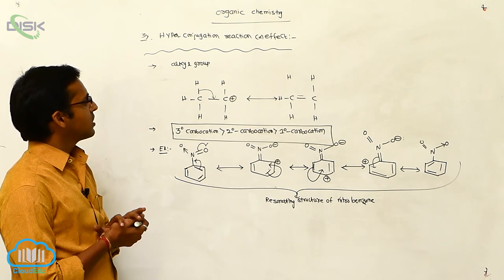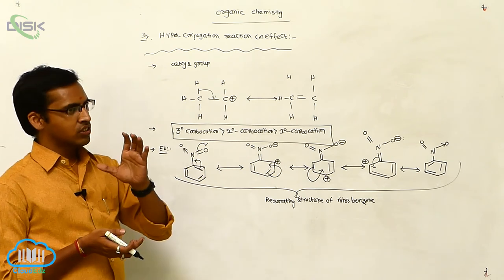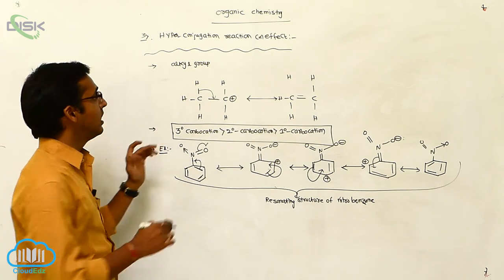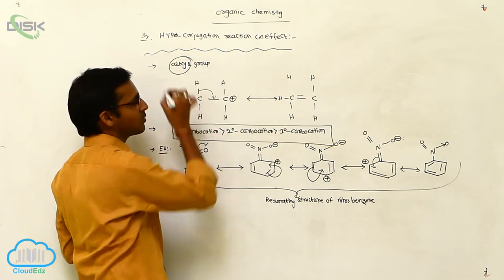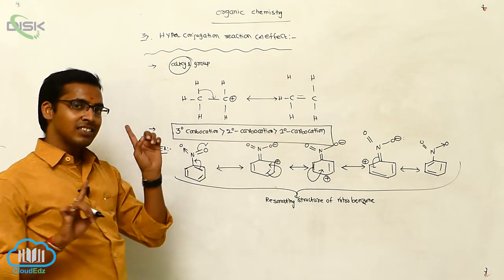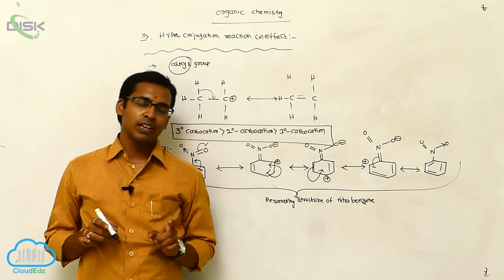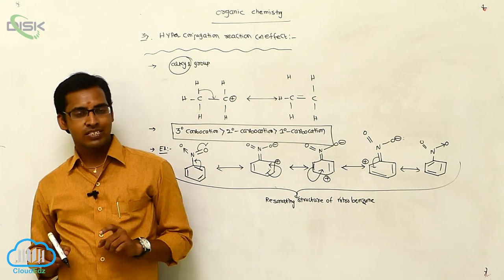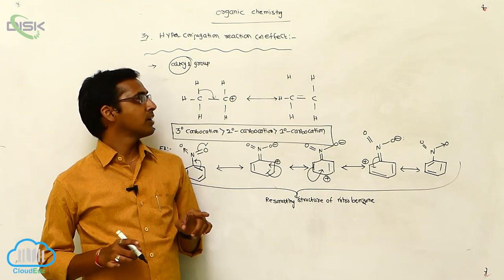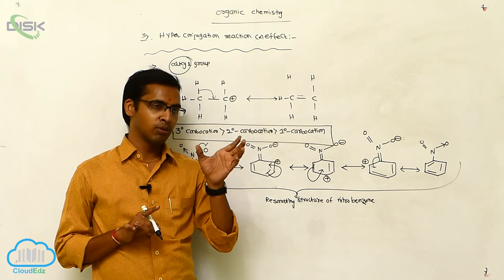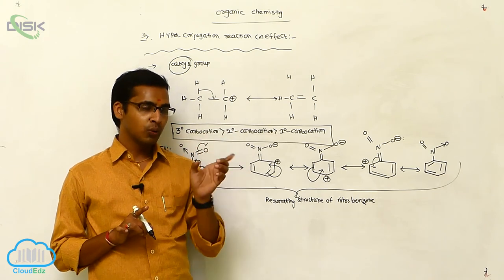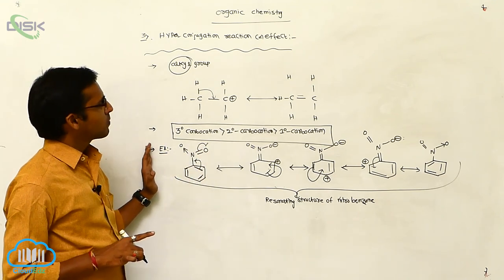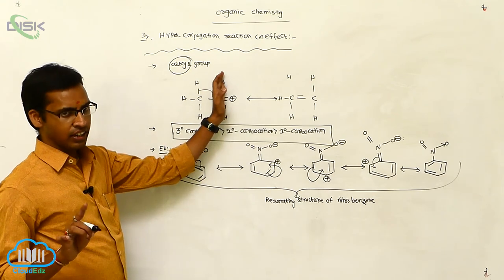Hyperconjugation generally occurs in the presence of at least one hydrogen atom attached to an alkyl group. The difference between the inductive effect and mesomeric effect is: in the inductive effect, sigma electrons are transferred; in the mesomeric effect, pi electrons are transferred from a double bond or lone pair to an adjacent atom. This is your electron displacement in an organic reaction.